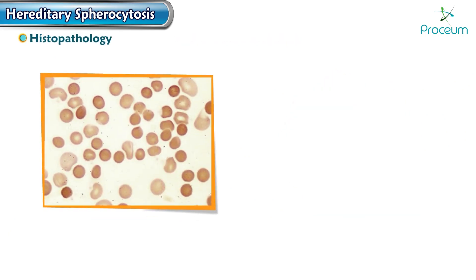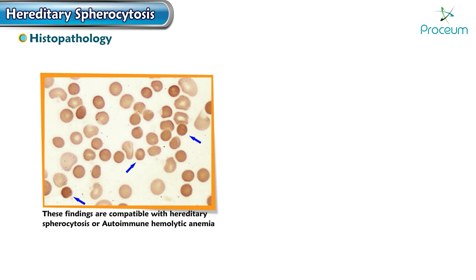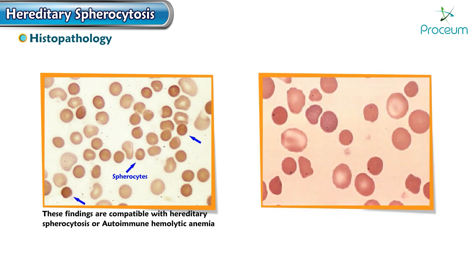Here is a histopathological image of a peripheral blood smear showing multiple spherocytes — small, dark, dense, hyperchromic red blood cells without central pallor. These findings are compatible with hereditary spherocytosis or the more common autoimmune hemolytic anemia. Another image shows anisocytosis and several hyperchromic spherocytes, with Howell-Jolly bodies present in the red blood cells of this asplenic patient diagnosed with hereditary spherocytosis.